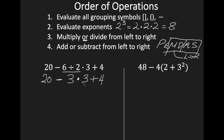Again, going from left to right, you have multiply or divide. We divided first; now we're going to multiply. 3 times 3 is 9. So I have 20, take away my 9, and then add 4.